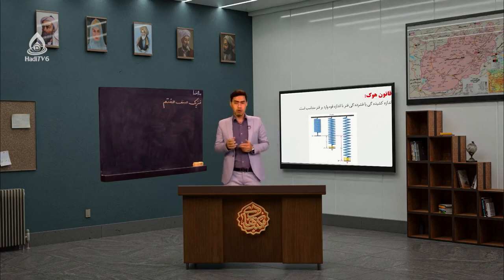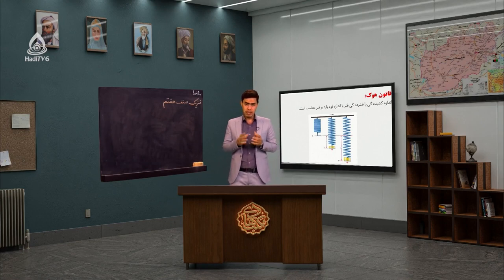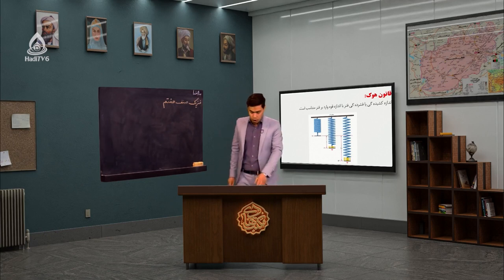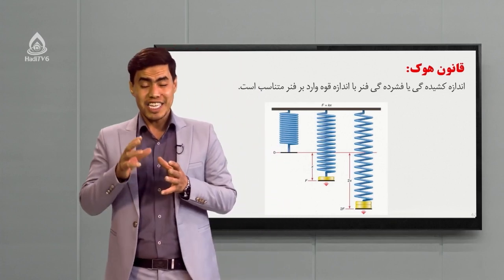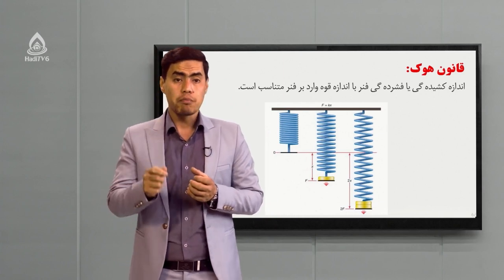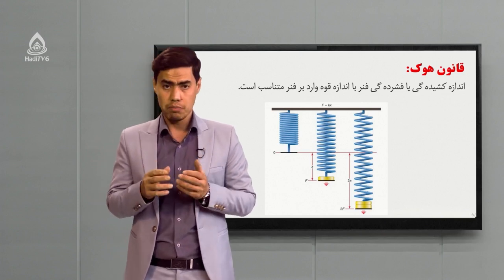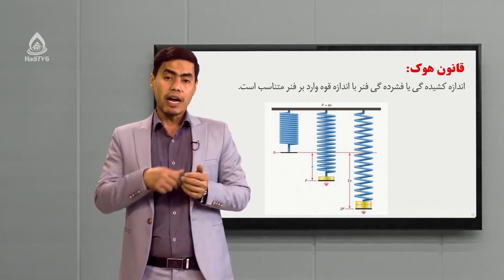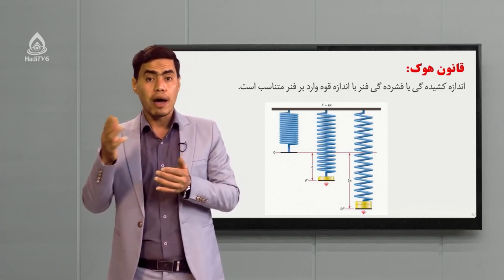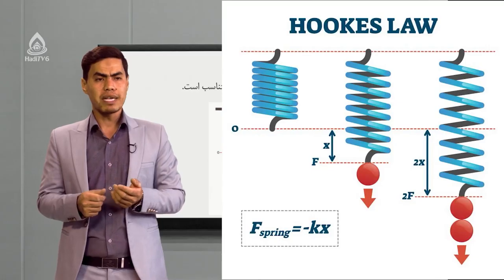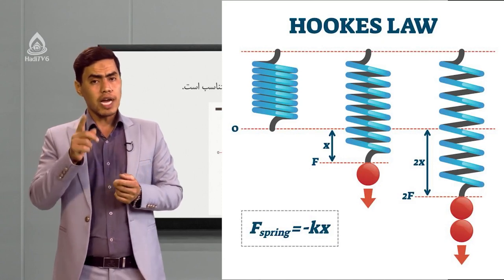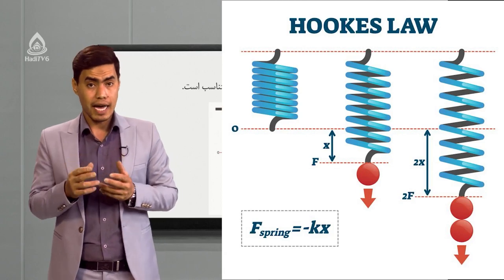در ساخت قوه‌سنج‌های ساده از فنر استفاده میشه. به این منظور یک قانون باید یاد بگیریم به نام قانون هوک که آقای رابرت هوک فیزیکدان انگلیسی آن را کشف کرد. قانون هوک میگوید: اندازه کشیدگی یا فشردگی یک فنر با قوه‌ای که بر آن وارد میشه متناسب است. یعنی اگه قوه F به یک فنر وارد کنید و فنر X کشیده شود، با قوه دو برابر F، فنر هم دو برابر کشیده میشه.